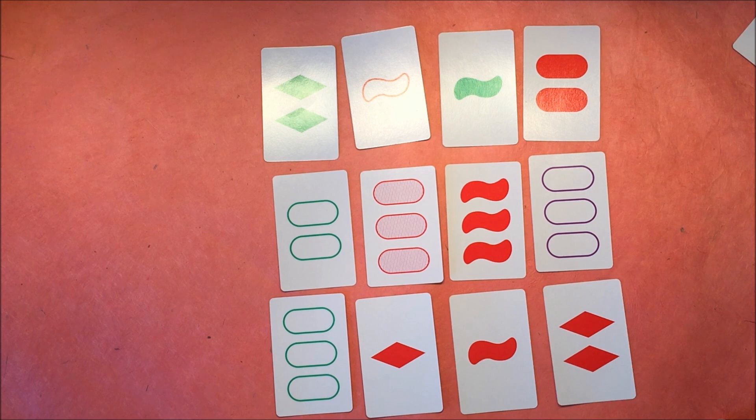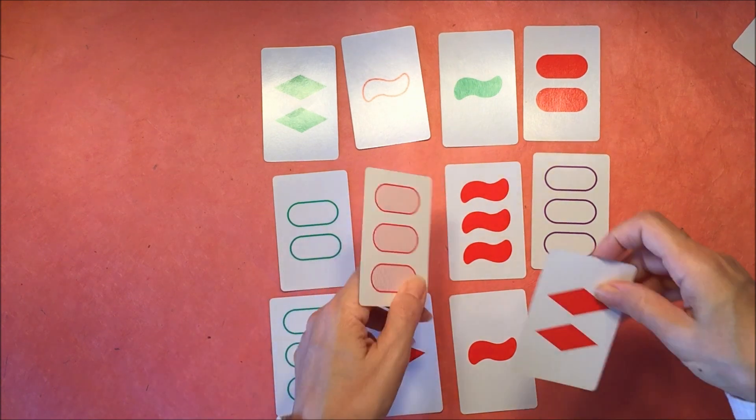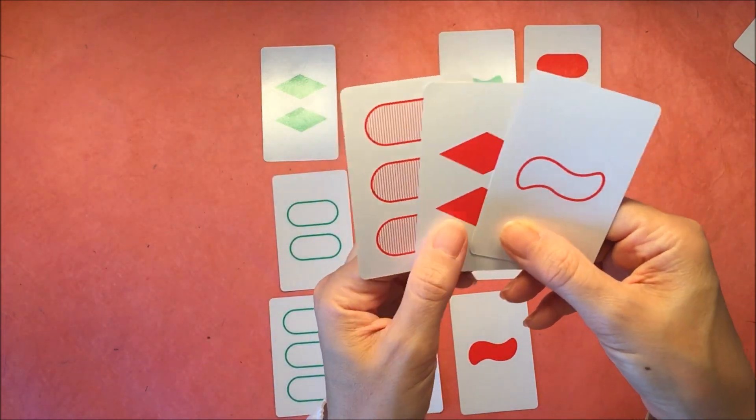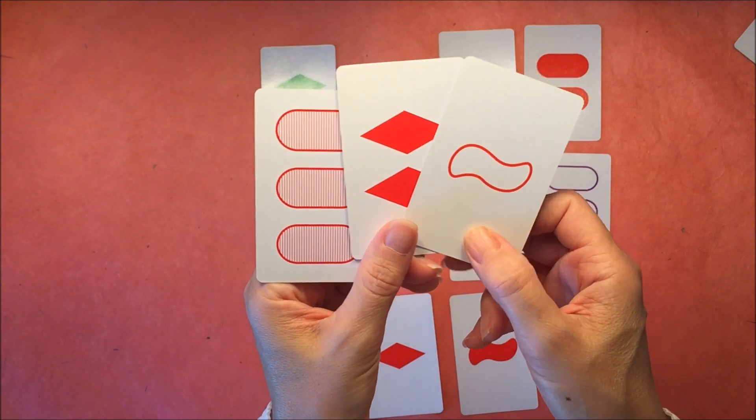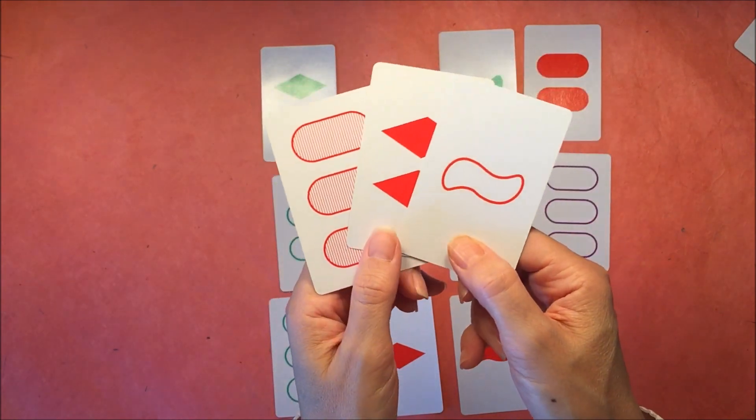So let's look for another set. And I am just letting the video run for a few seconds just so that you can play along with me. So here's a set. They're all red, but they are different shapes, different numbers, and different fills.